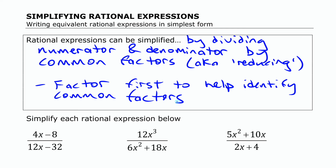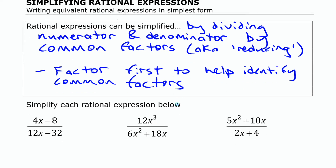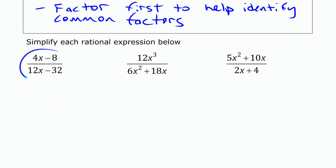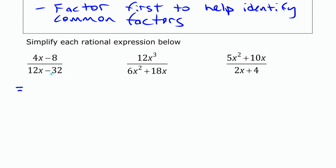Let's look at a couple of examples. The easiest way to simplify these is to first write them in factored form — write the numerator in factored form, write the denominator in factored form.